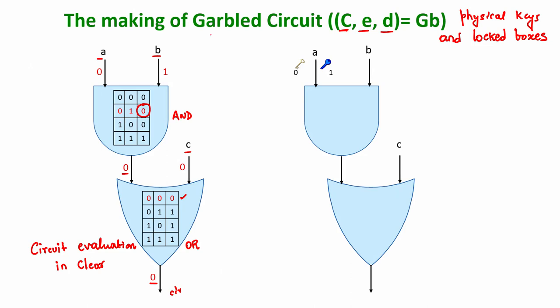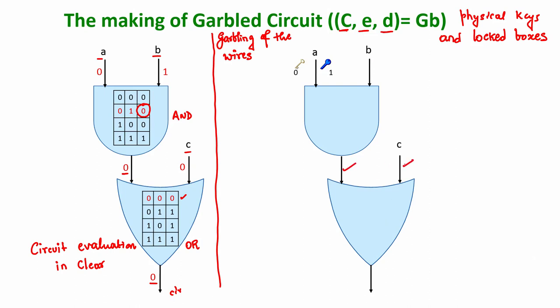The first step in Yao's garbling scheme is the garbling of the wires. In a Boolean circuit, values A and B pass through input wires, there is a wire coming out as an output of the AND gate, and the OR gate has its own input and output wires. To perform wire garbling, one of the parties — remember Yao's protocol is a two-party protocol — is assigned the role of garbler.